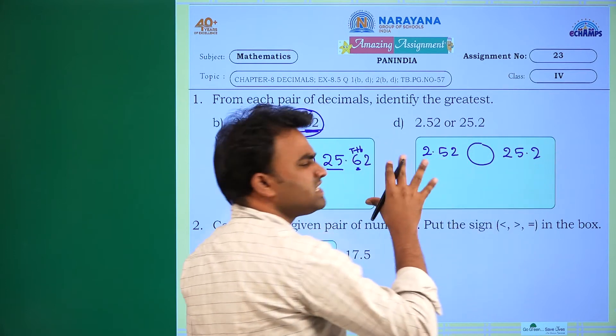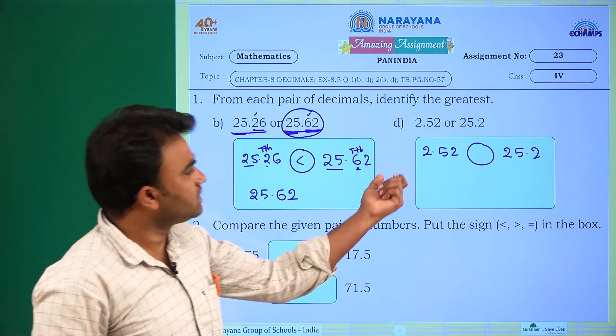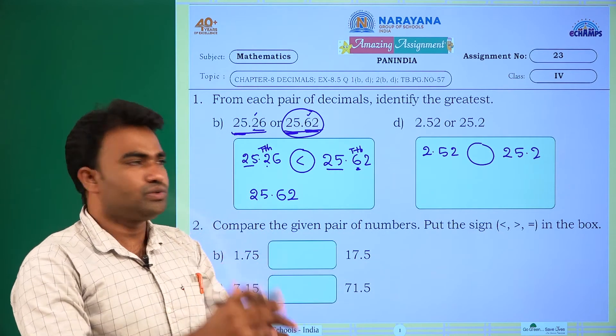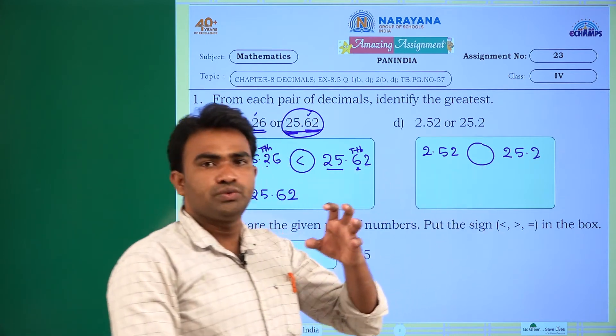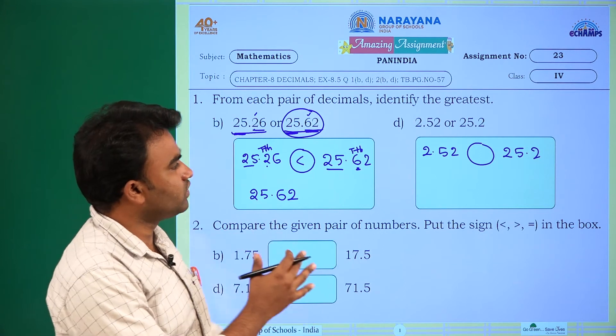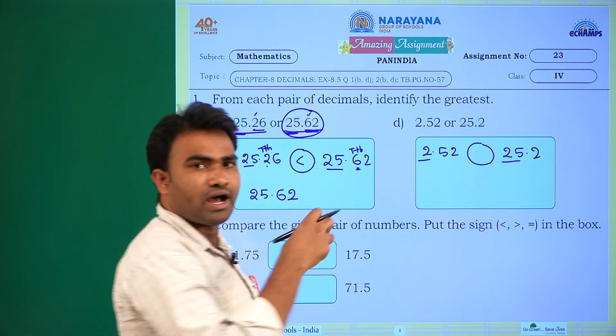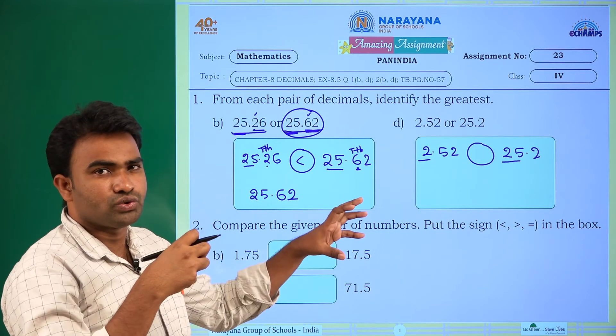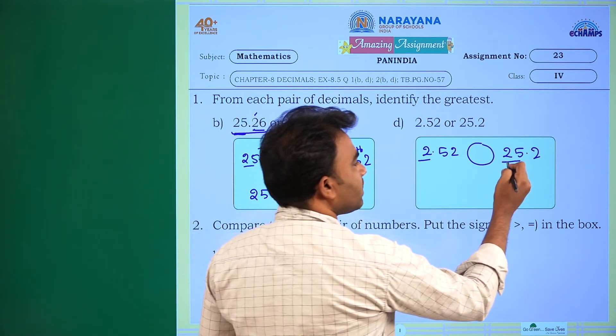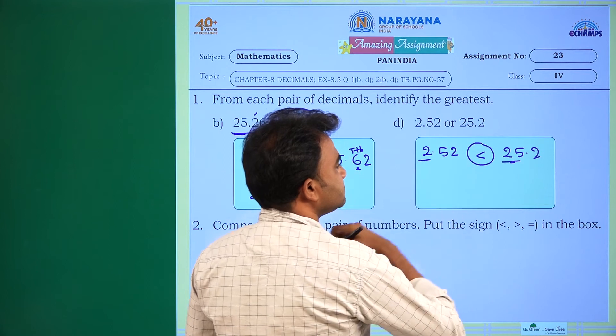By seeing that only we can say that 2.52, only 2.52 and 25.2, among these two, which one is greatest, 2 or 25? In whole number part we have 25 and 2, so 25 is greatest.